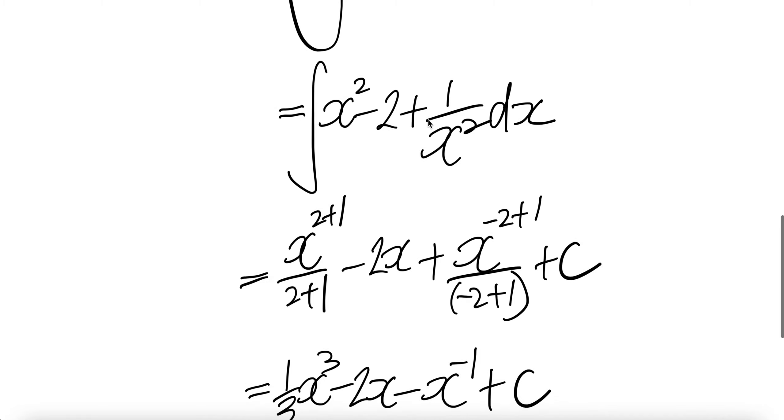Now, the integral of a sum is the sum of integrals. Integral of x squared is x to the 2 plus 1 over 2 plus 1. Integral of minus 2 is minus 2x. And this is x to the negative 2. Integral of x to the negative 2 dx is x to the negative 2 plus 1, divided by the same exponent.